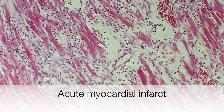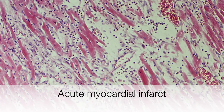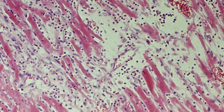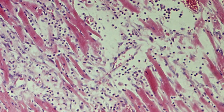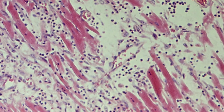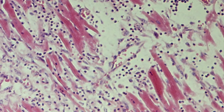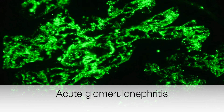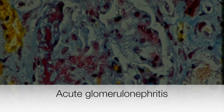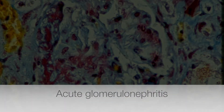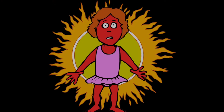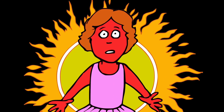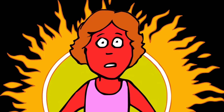A good example of necrosis causing acute inflammation is following an acute myocardial infarct. You can see polymorphs infiltrating the dead heart muscle. Acute glomerulonephritis is an example of immune-mediated acute inflammation. Radiation may also cause acute inflammation, and the most common cause of this is sunburn.